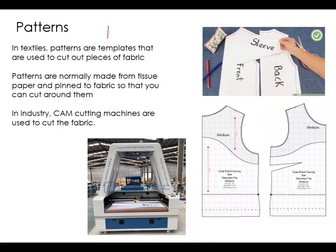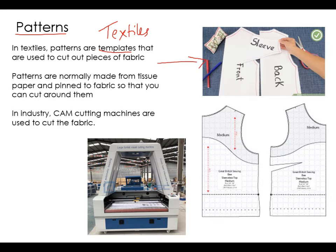This is for all my textiles people — we're going to talk about patterns. Patterns in textiles are basically templates and they are used to cut out pieces of fabric. For example, on a shirt you might have the front, you might have the sleeve, you might have a collar. You cut out all those individual bits using a template called a pattern, and then those pieces are machine stitched or stitched together.